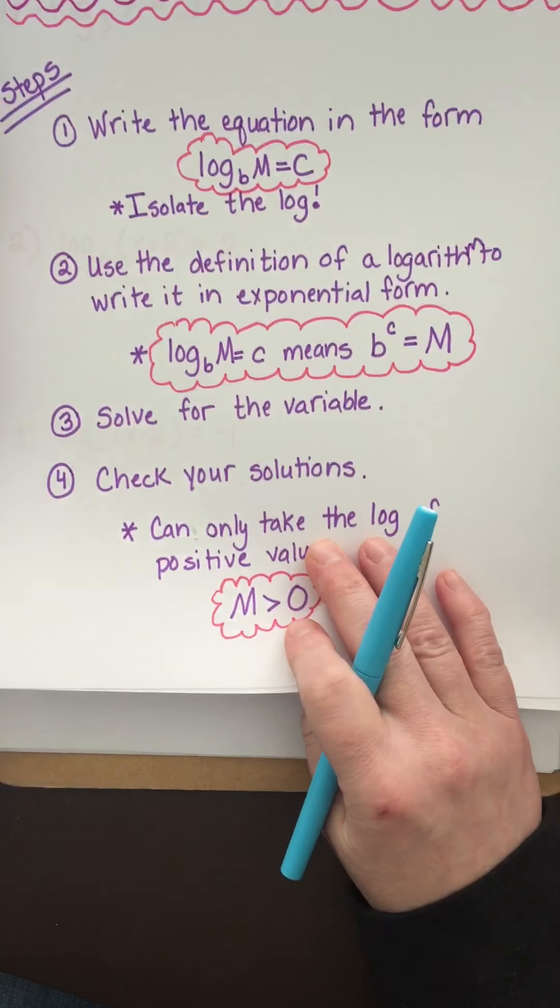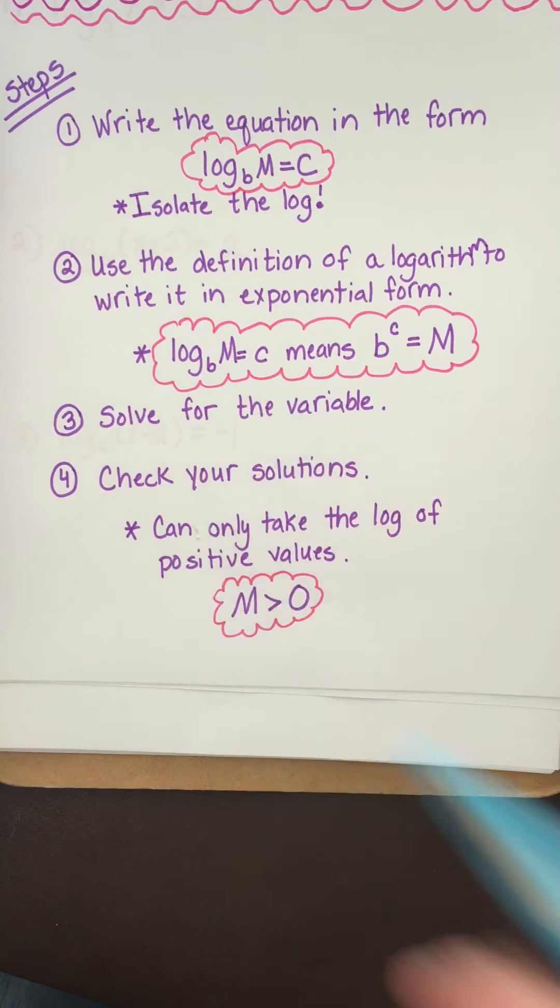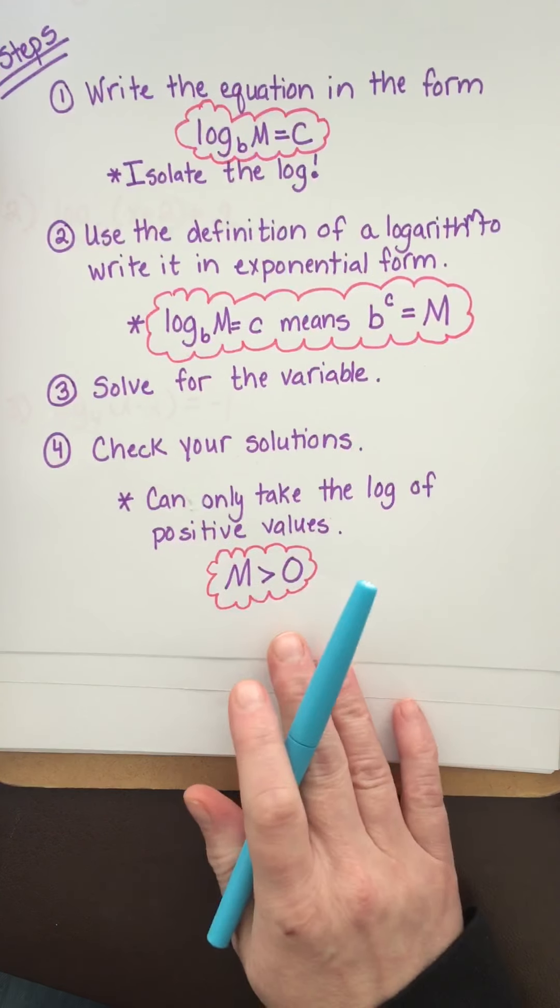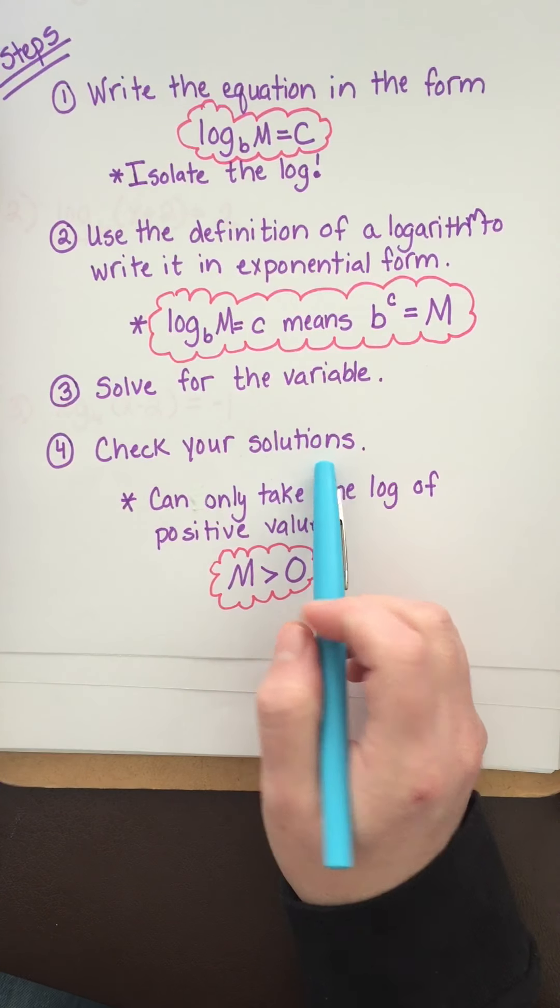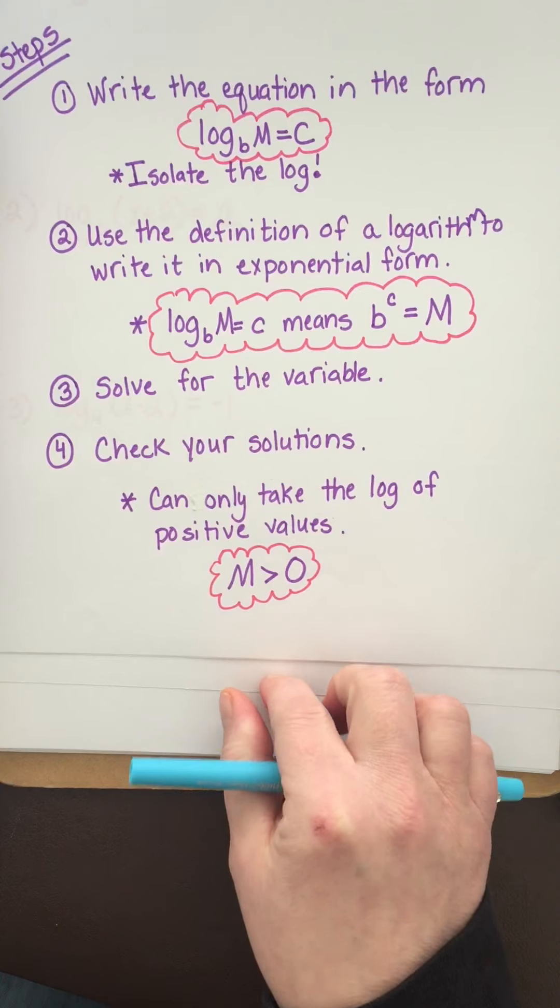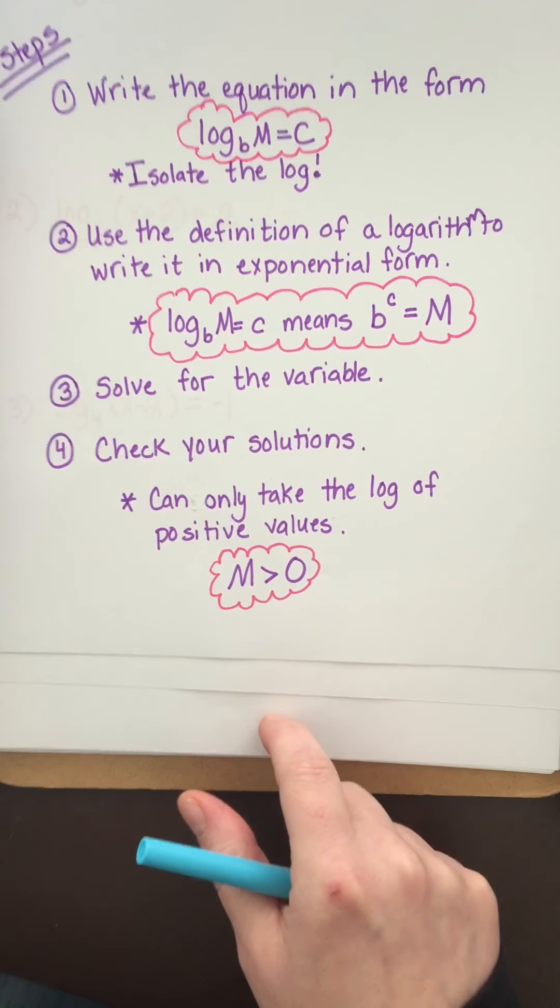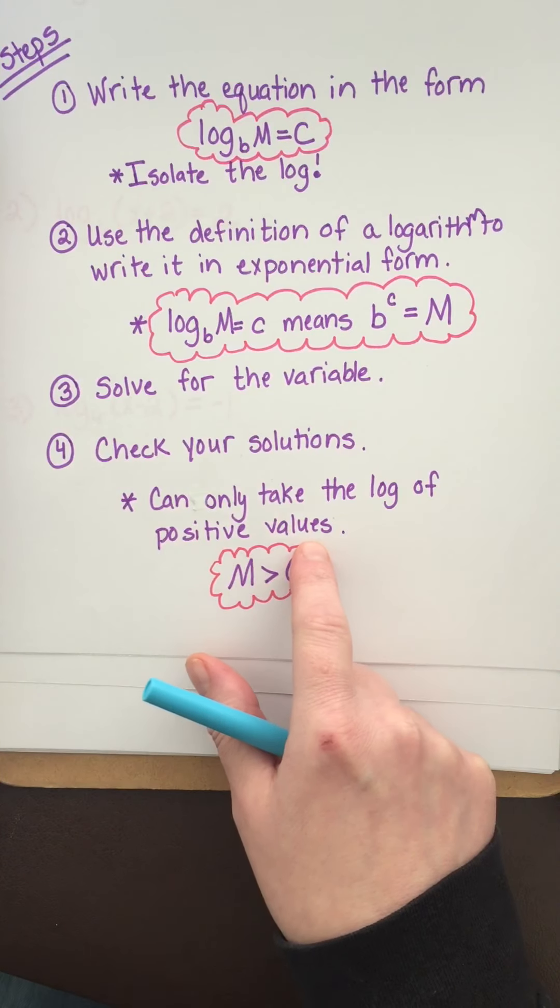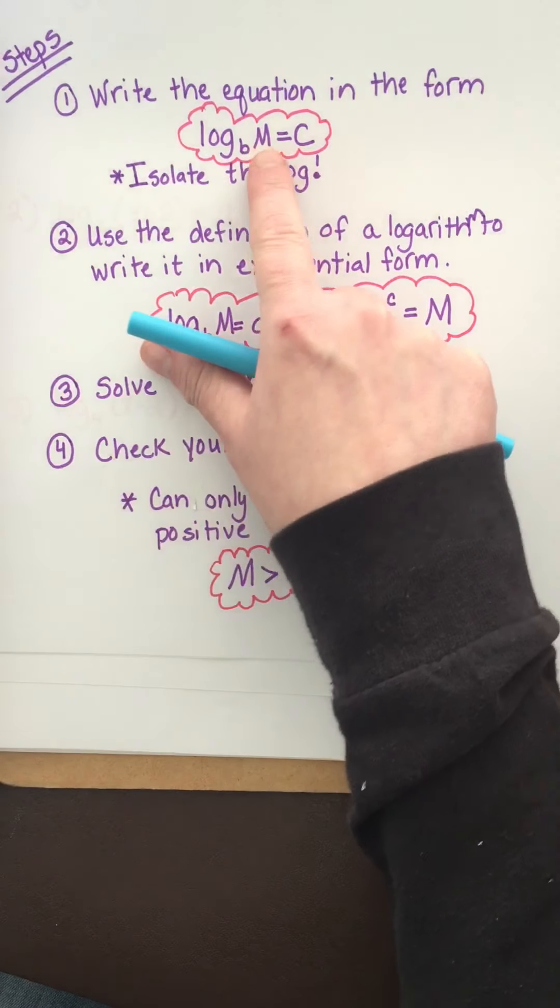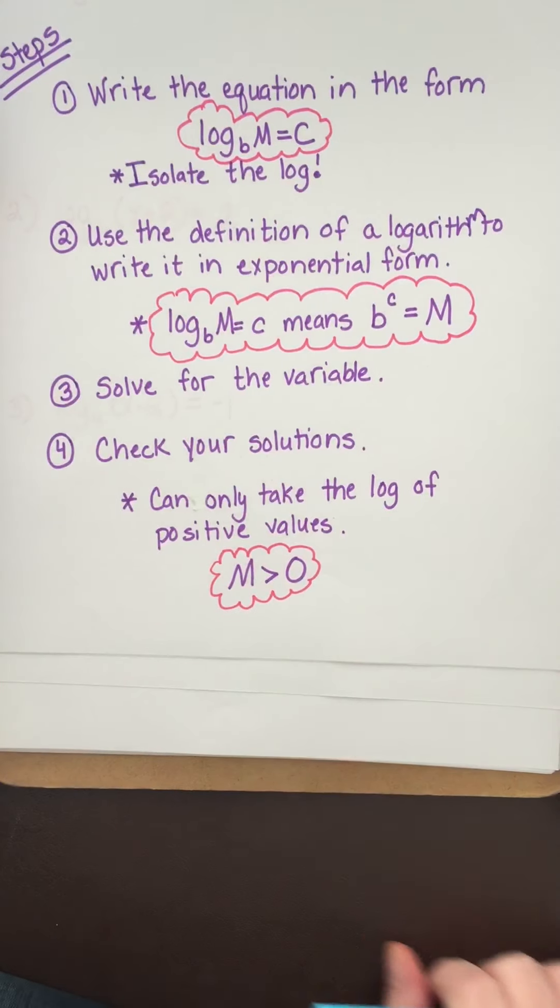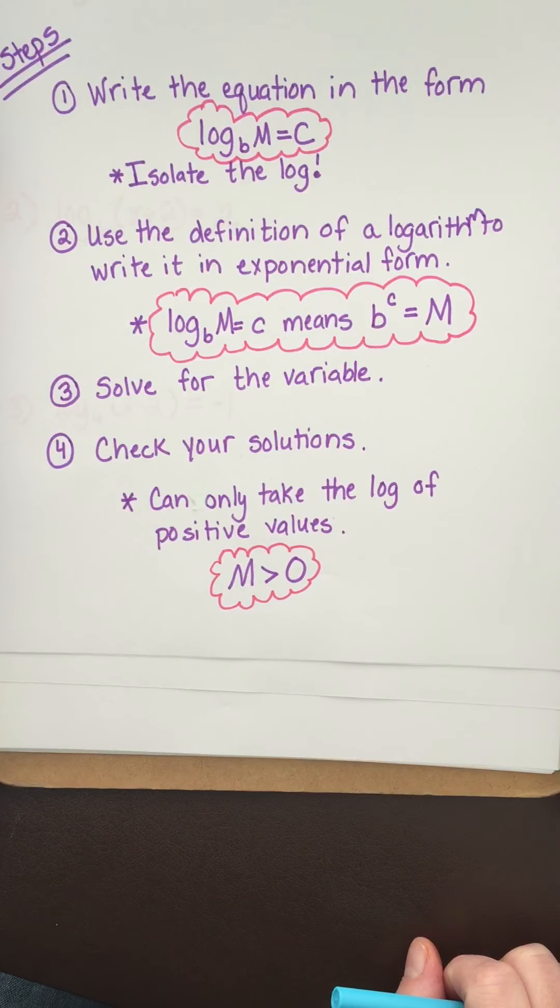The third step is to solve for the variable, getting it on a side by itself. Then check your solutions. You want to make sure you don't take the log of a number that's not positive. You can only take the log of positive values, so this m has to be greater than zero. Let's do some examples.